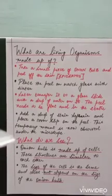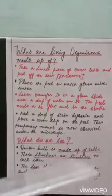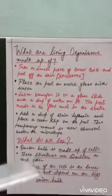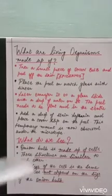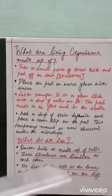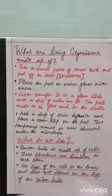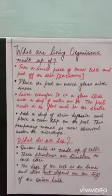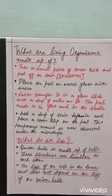What do we observe? We observe that the onion bulb is indeed made up of small subunits called cells, and that these structures are all similar to each other. Another important observation is that the size of the cell is the same and does not depend on the size of the onion bulb. Whether the onion bulb used is very big or small, the size of the cells remains the same.